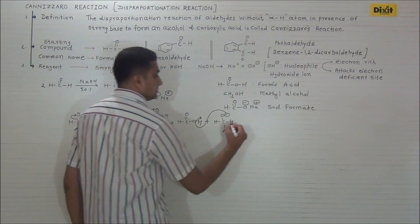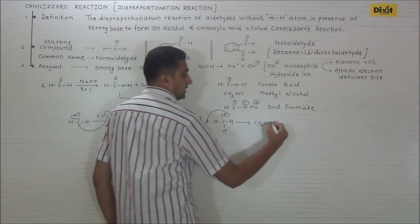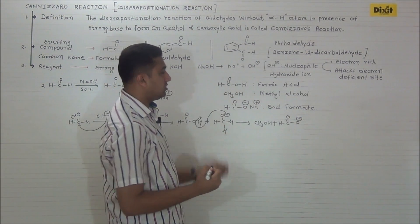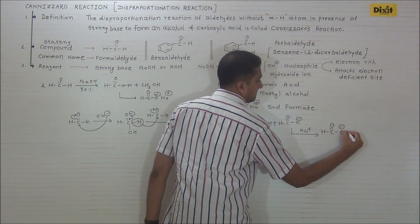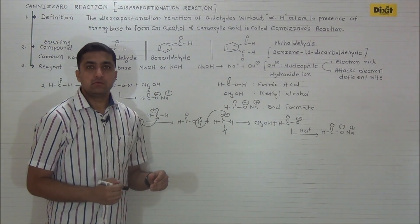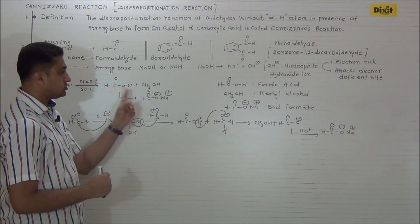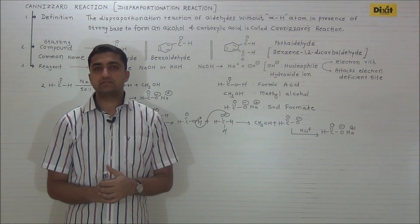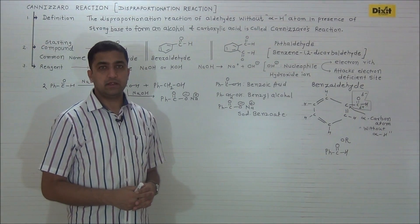The methoxide ion is a strong base; it immediately extracts a proton from formic acid to form CH₃OH and HCOO⁻. The formate ion in presence of Na⁺ gives sodium formate. As in this reaction both molecules involved are identical, it is called a simple Cannizzaro reaction — one molecule of formaldehyde undergoes oxidation to form formic acid and one molecule undergoes reduction to form methyl alcohol. Hence it is an example of a disproportionation or redox reaction.